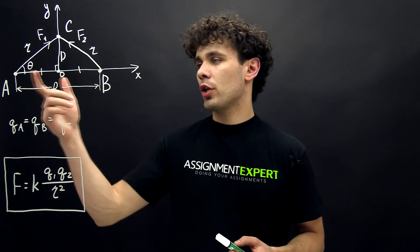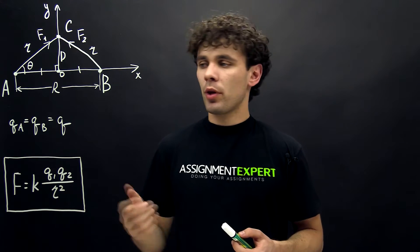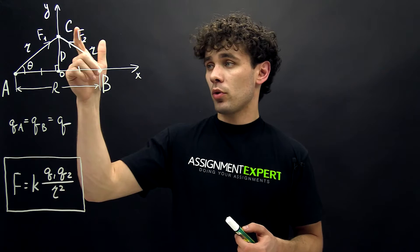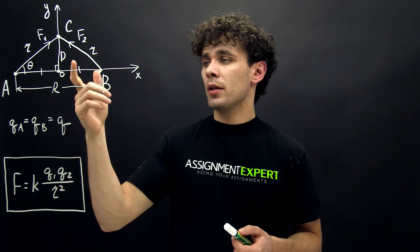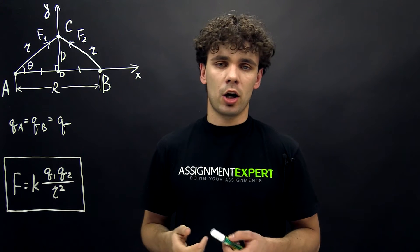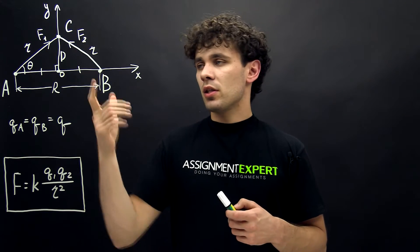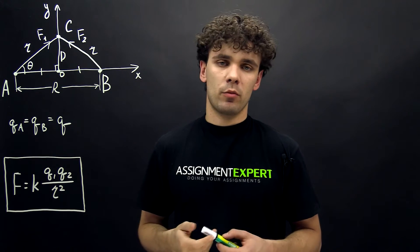We have two point charges QA and QB at points A and B. The distance between them is R, and the third charge QC at point C is on a perpendicular bisector at a distance D away from the center of the line R. Our task is to find the distance D at which the electrostatic force at point C will be maximum.